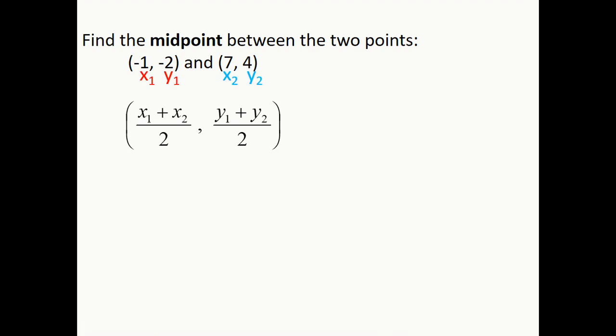Those numbers are just a shortcut for saying it's from the first point or second point. See, x1 is x from the first point, y1 is y from the first point, x2 is x from the second point, y2 is y from the second point. And all we got to do is plug them into their respective locations. So for x1 we're going to put negative one, for x2 we're going to put seven, for y1 we're going to put negative two, and for y2 we're going to put four.